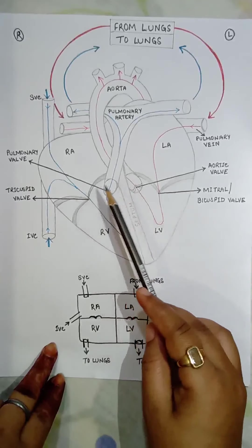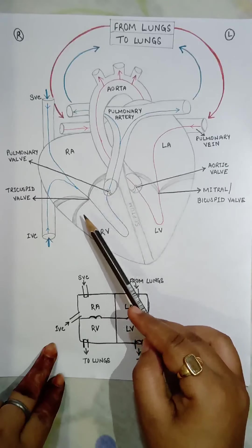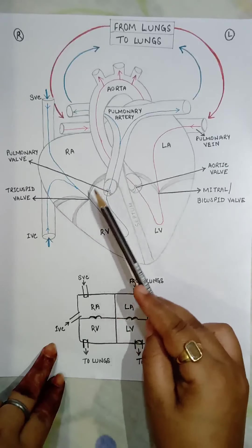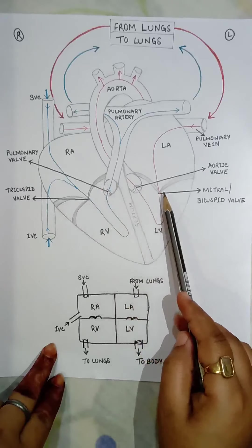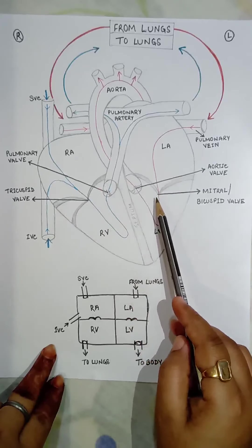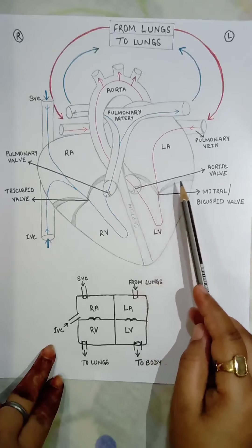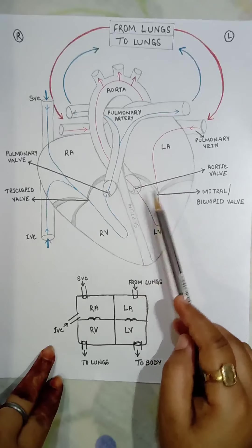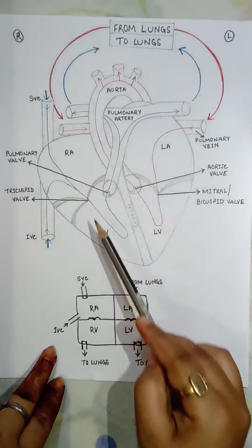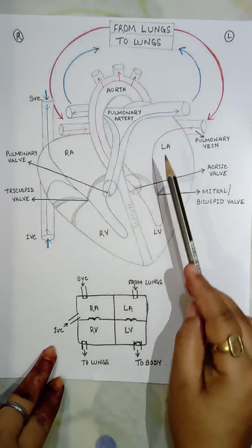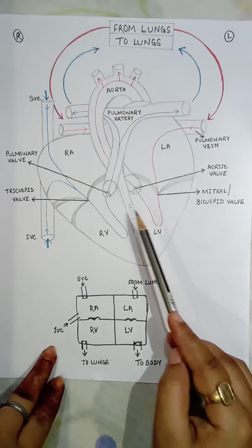This is the tricuspid valve — I have drawn three cusps to represent it. And here is the mitral or bicuspid valve, drawn with two cusps. These two valves divide the atrium and ventricle between them.